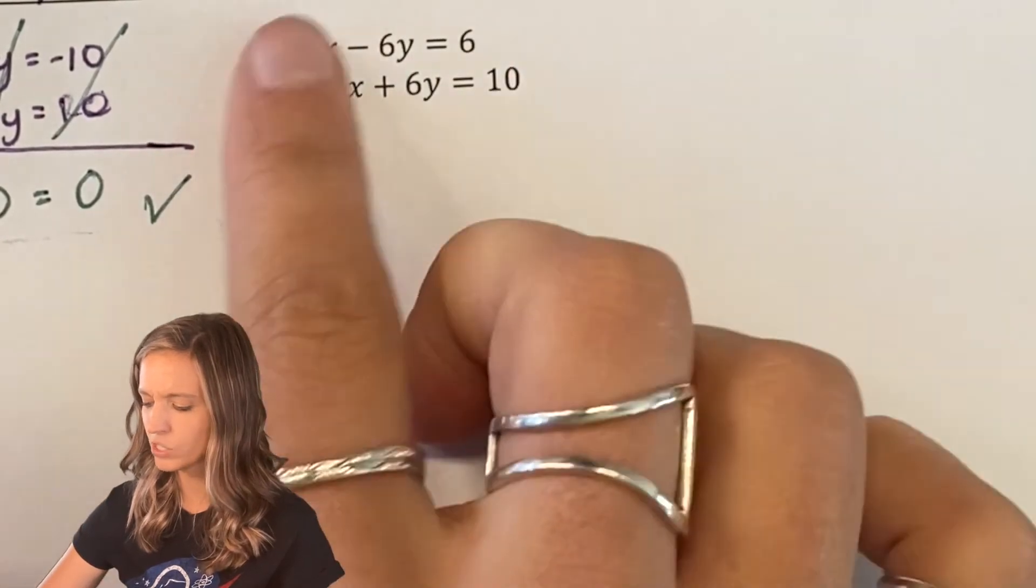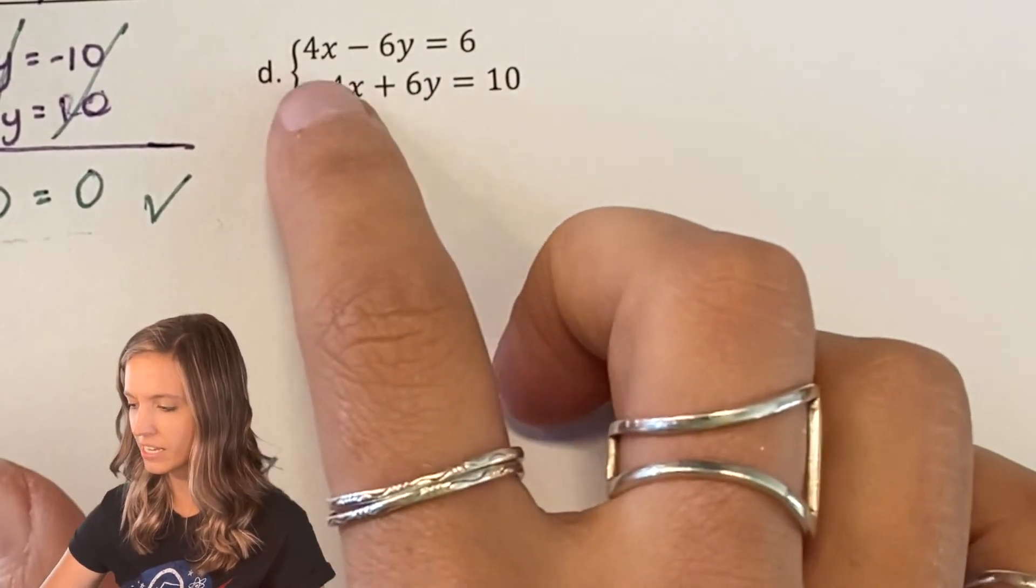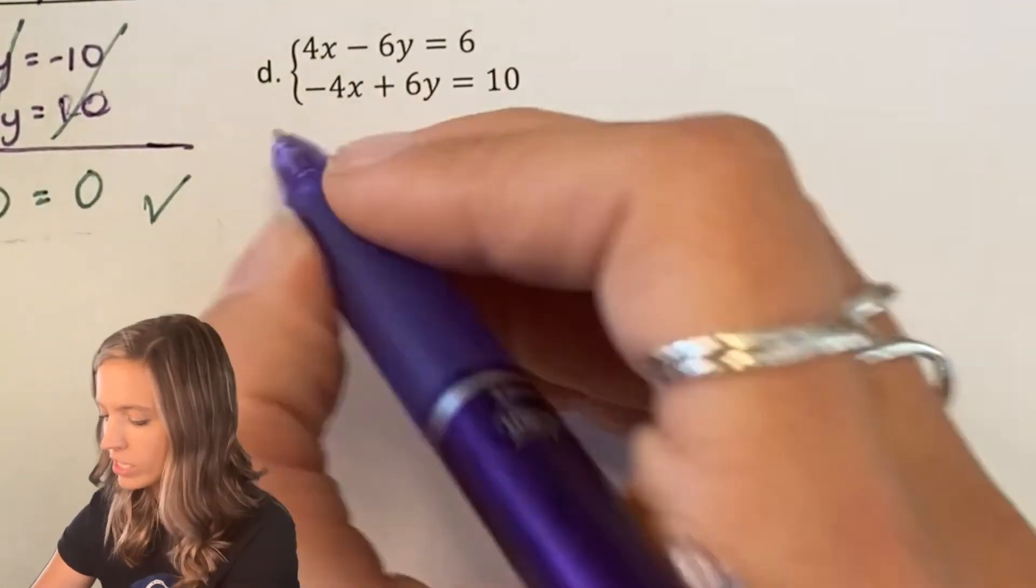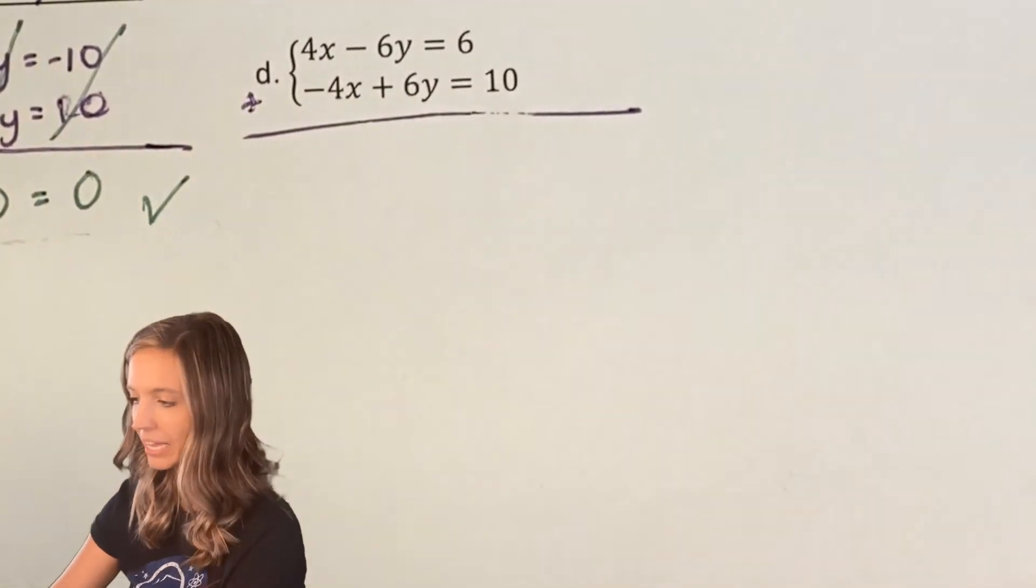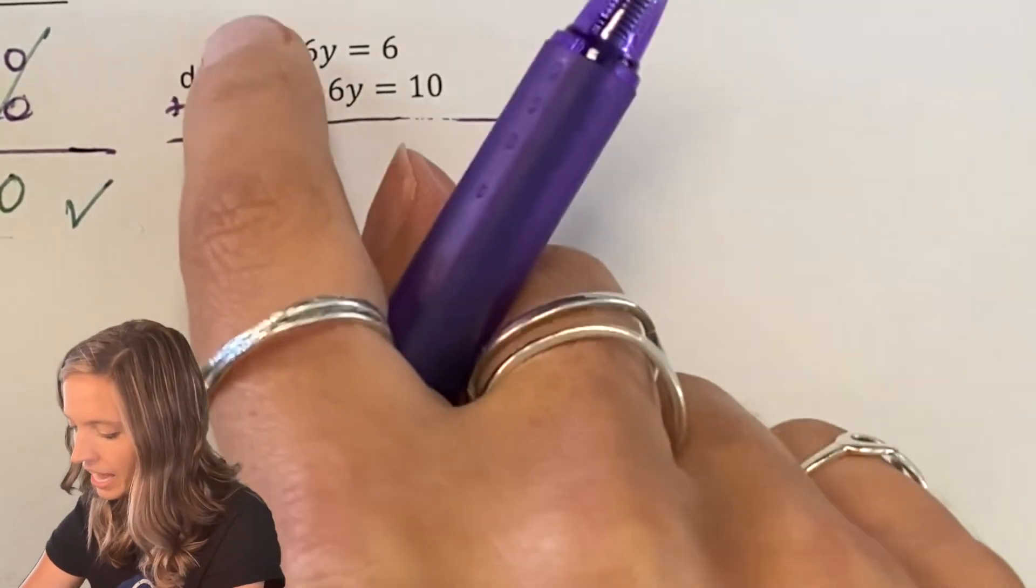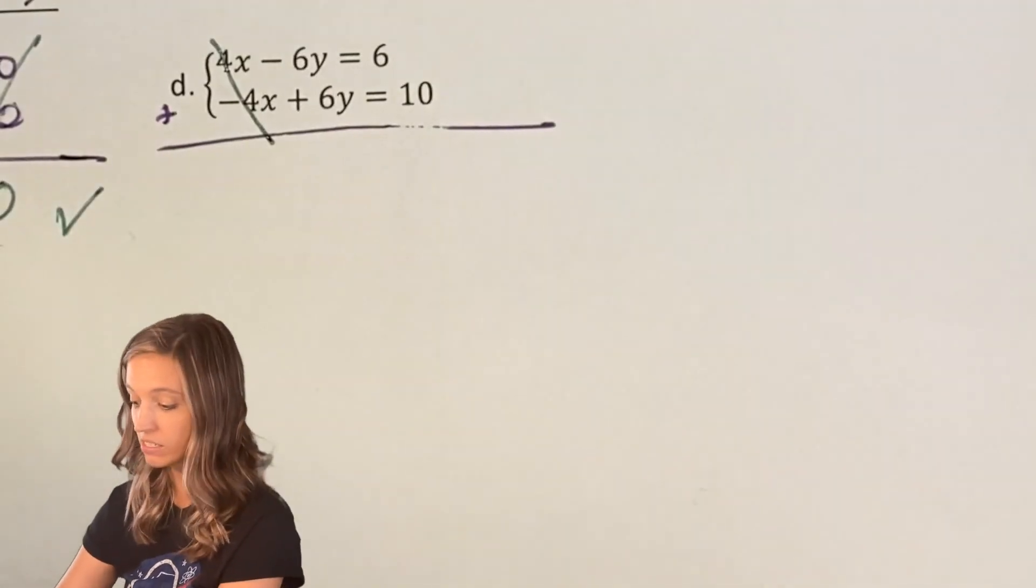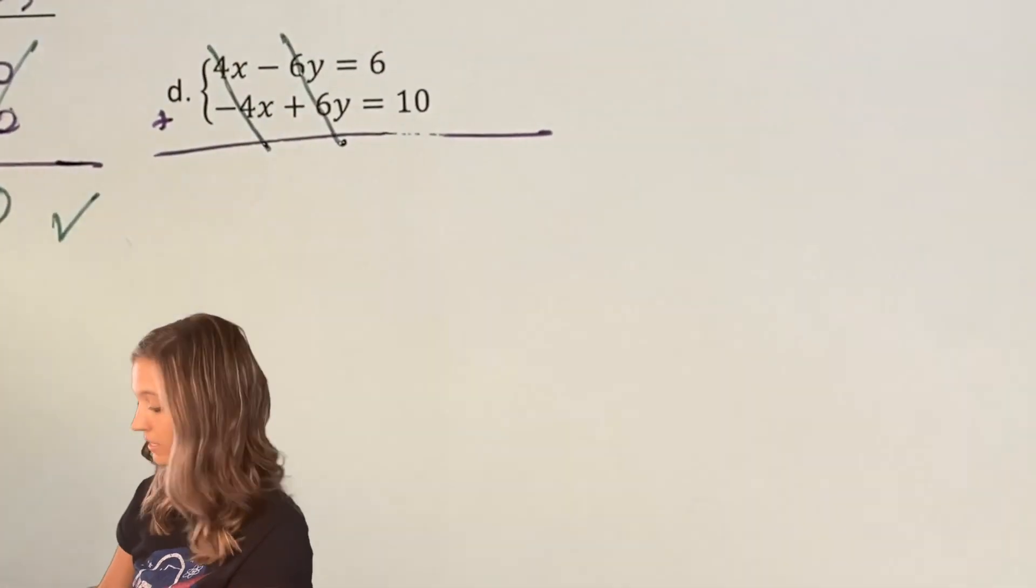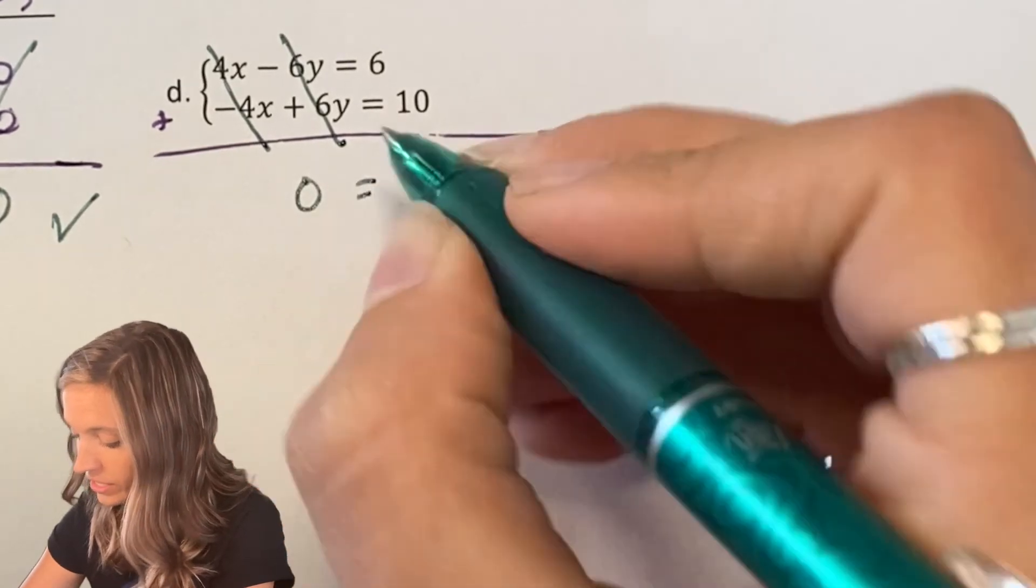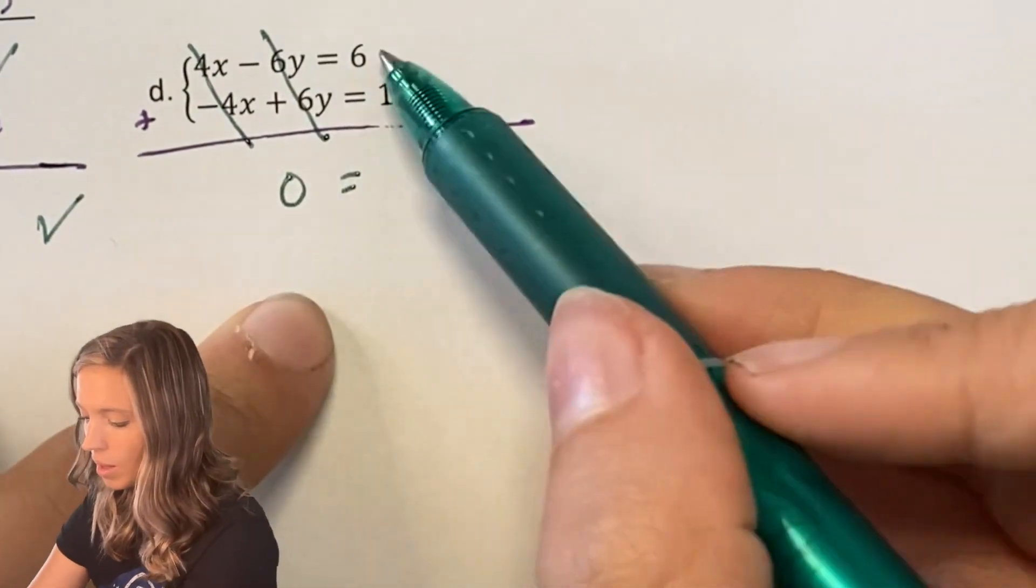Let's try this second one as well. I'm already a little suspicious because I see a lot of repeating values. So this one, if I add straight down, will I eliminate one of my variables? Yeah, for sure. So if I go add straight down, I'm going to eliminate my x's. I'm going to eliminate my y's because those would just add out. So that leaves me with a zero again, just like this problem. But look over here. 6 + 10 is 16.